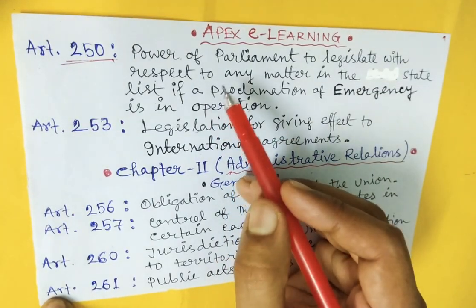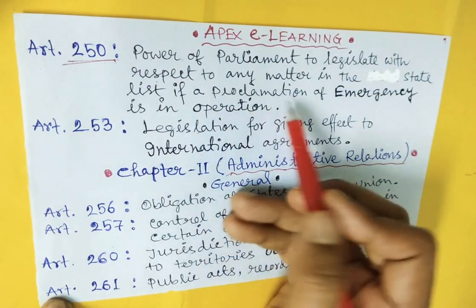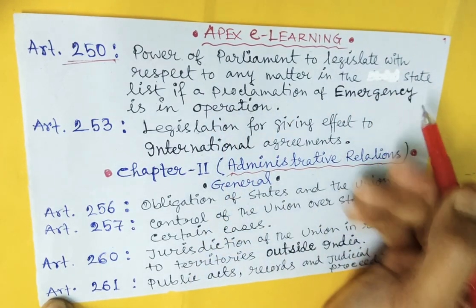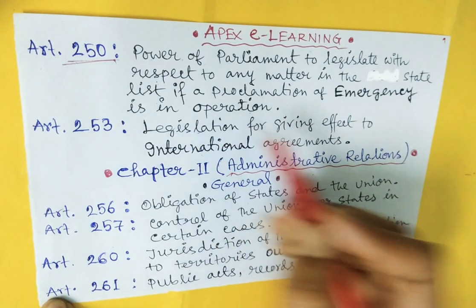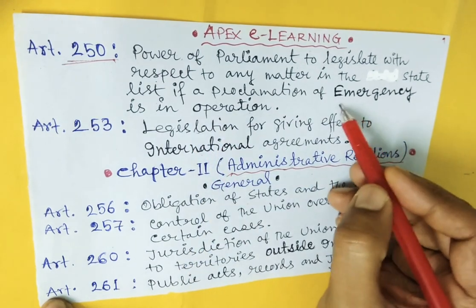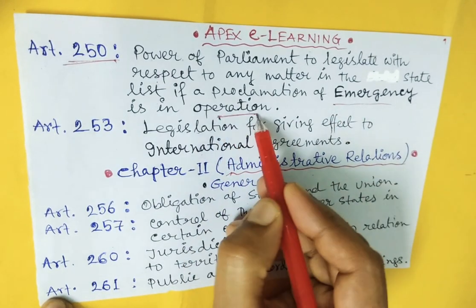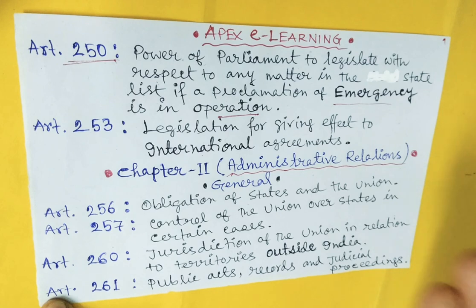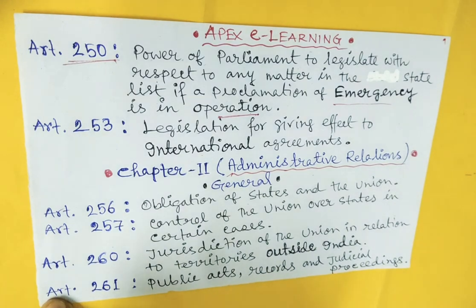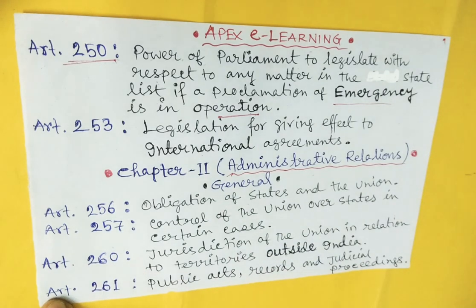Article 250 is the power of Parliament to legislate with respect to any matter in the state list. This applies when a proclamation of emergency is in operation. If the emergency is in operation, then India is the unitary form of government, and the total power goes to the union and Parliament.